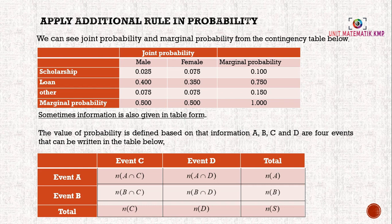Now we will look at the table for further understanding. From this table, we can see joint probability and marginal probability. The first part has scholarship, loan, other and then marginal probability, and we have joint probability here. Here, scholarship and male, we can see this is the probability of S ∩ M. We define scholarship as S, loan as L and other as O. This one is M and F. The middle part we call joint probability.